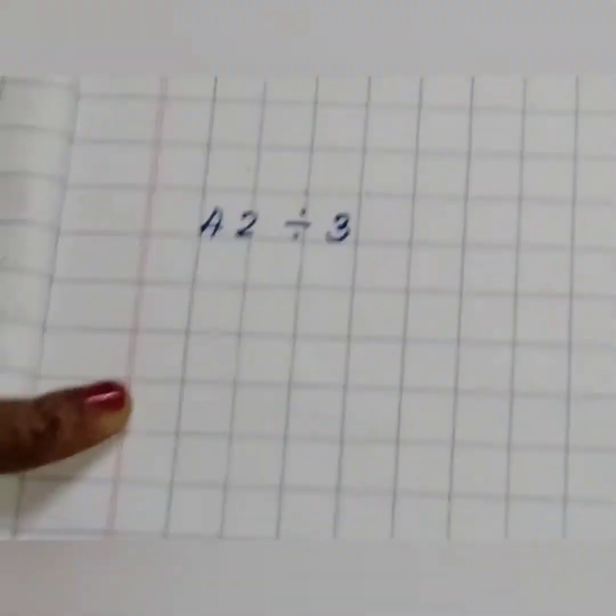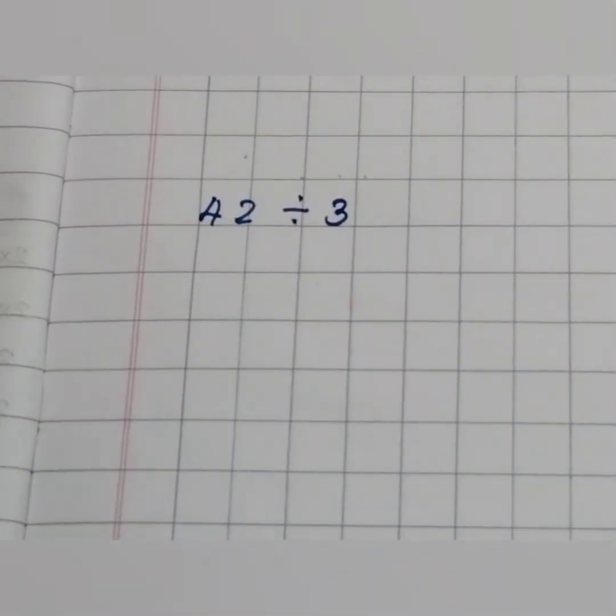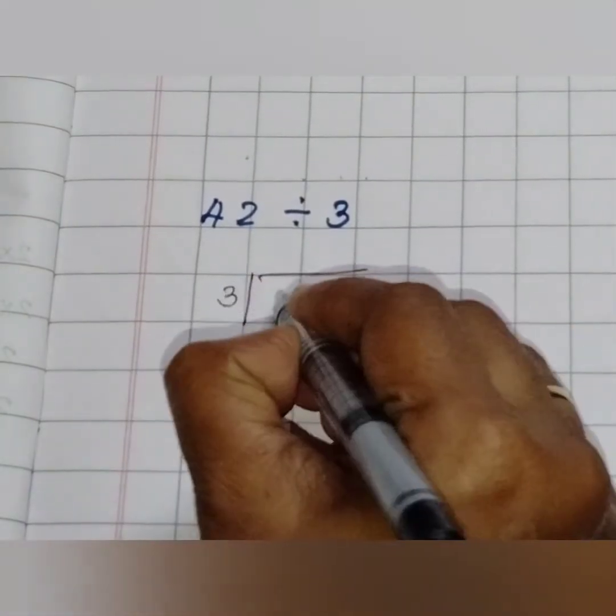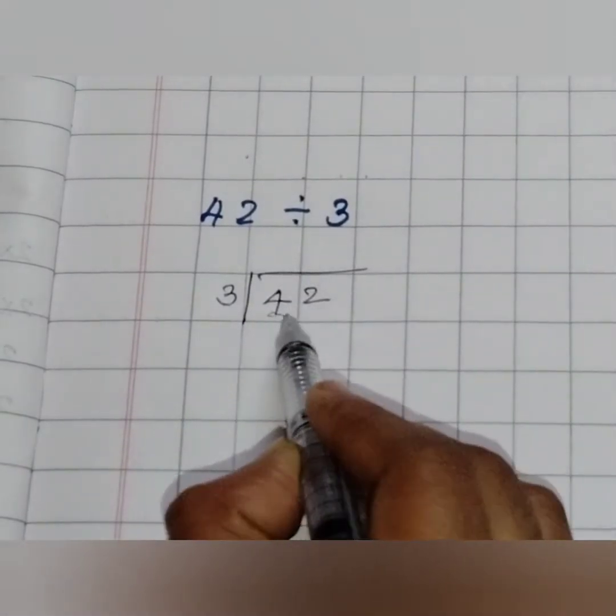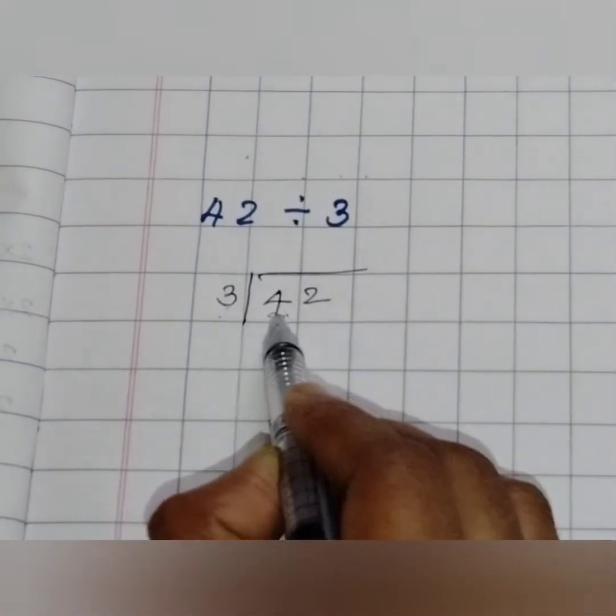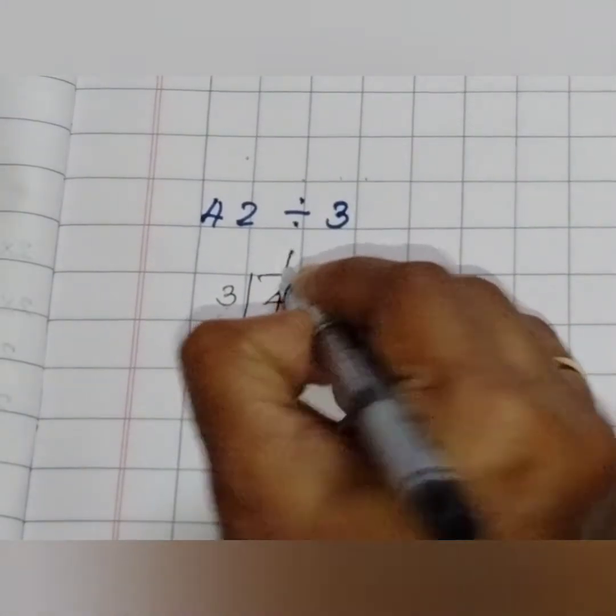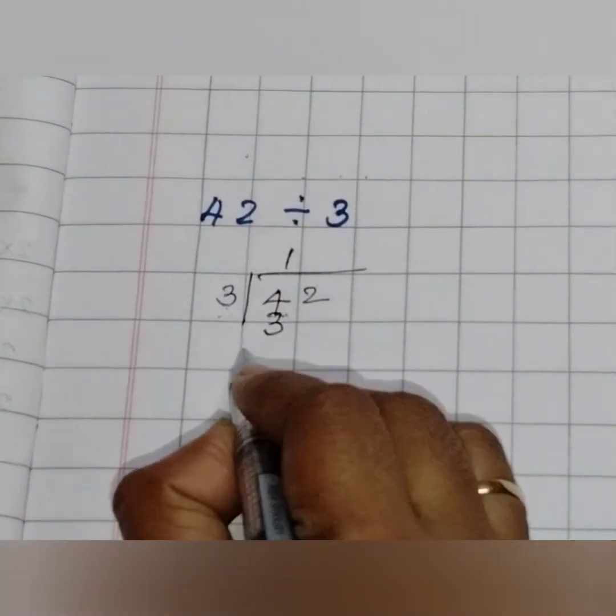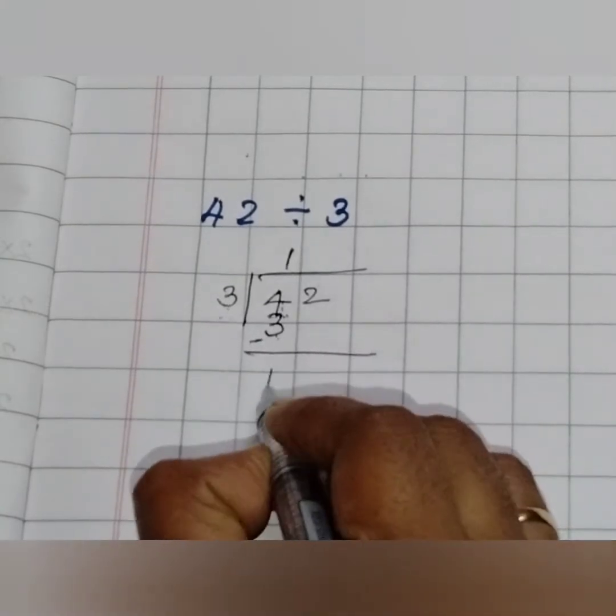Coming to the next question. 42 divided by 3. Writing 3 outside the division bar and 42 inside. Now let's check the first digit. 4 is bigger than 3, so we can do it alone. Now 3 ones are 3. Only that is possible because 4 is not there in 3's table. 4 minus 3 is 1.